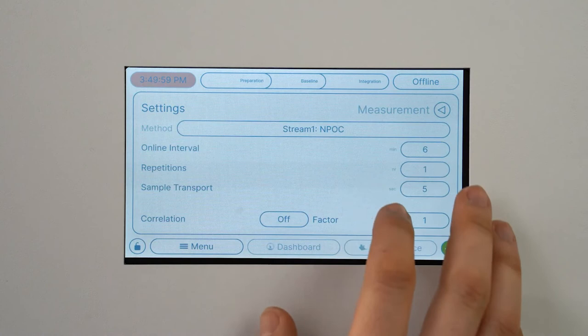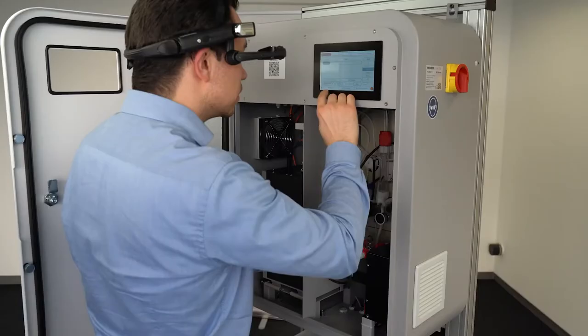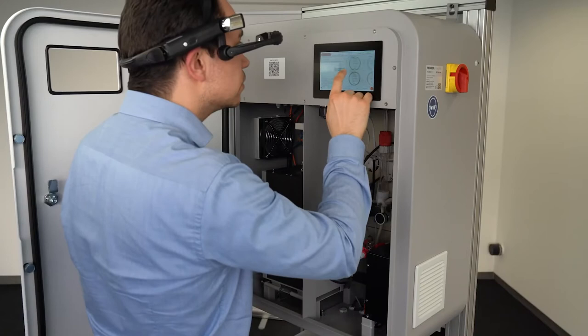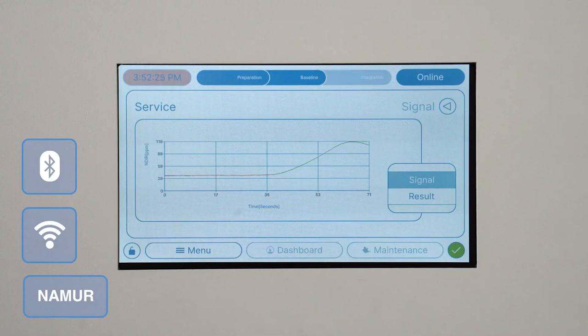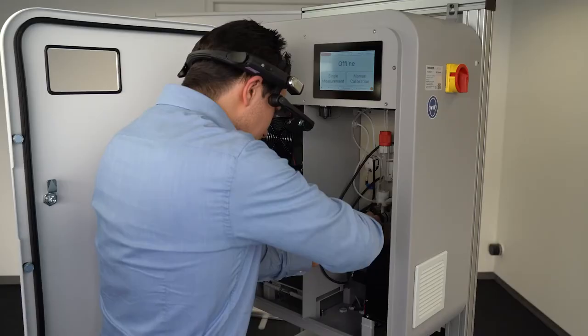The modern, intuitively operable touch panel provides the measurement and status information in a self-explaining and user-friendly manner. Extensive IIoT features such as predictive maintenance as well as state-of-the-art communication tools are available.